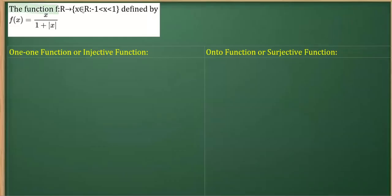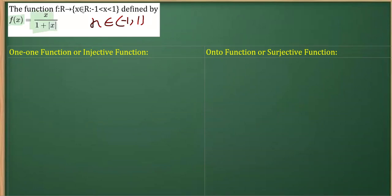In this question, the function f from ℝ to x belonging to ℝ, where x varies from minus 1 to 1 — open bracket. The definition of the function is f(x) = x over 1 plus x. We need to prove the function is both one-to-one and onto.